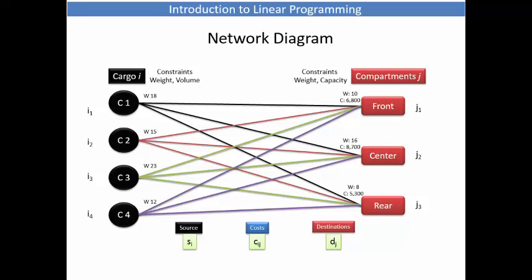Here we have a visualization of the problem as a network diagram. The cargo is the source, the compartments are the destinations, and the arcs are the constraints.